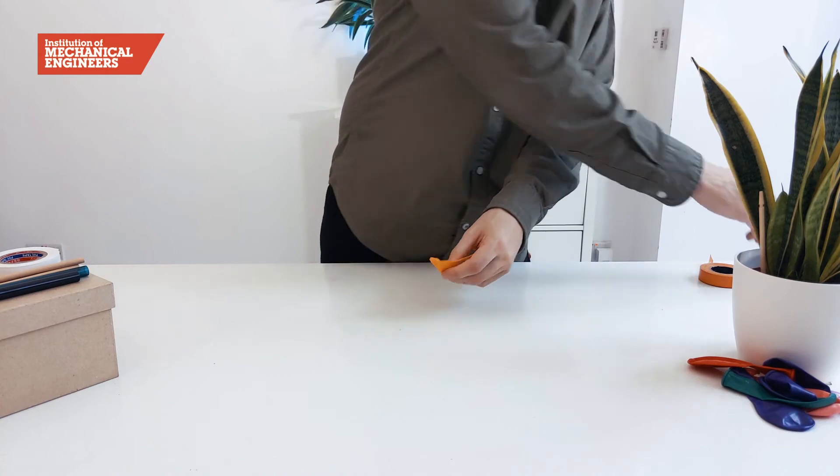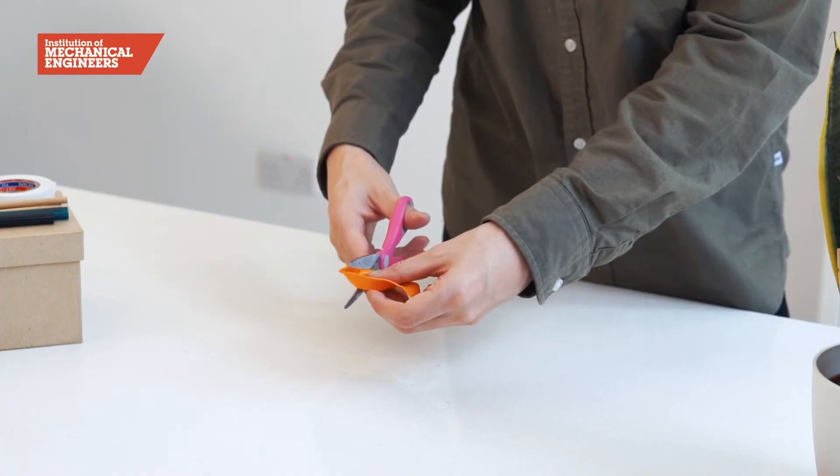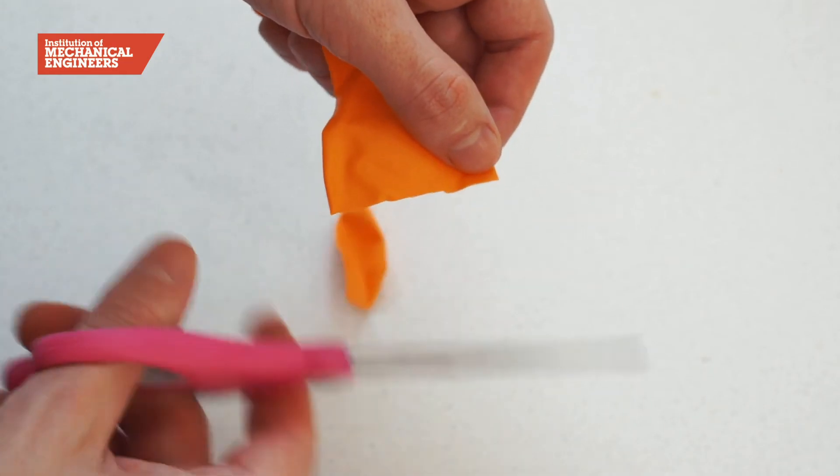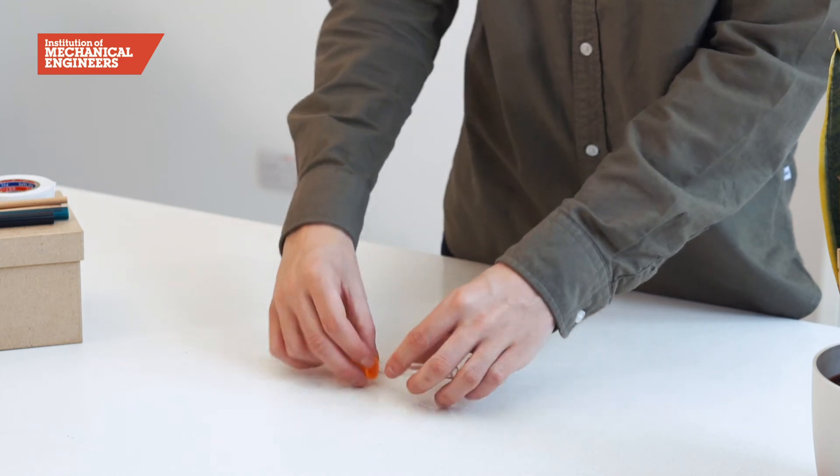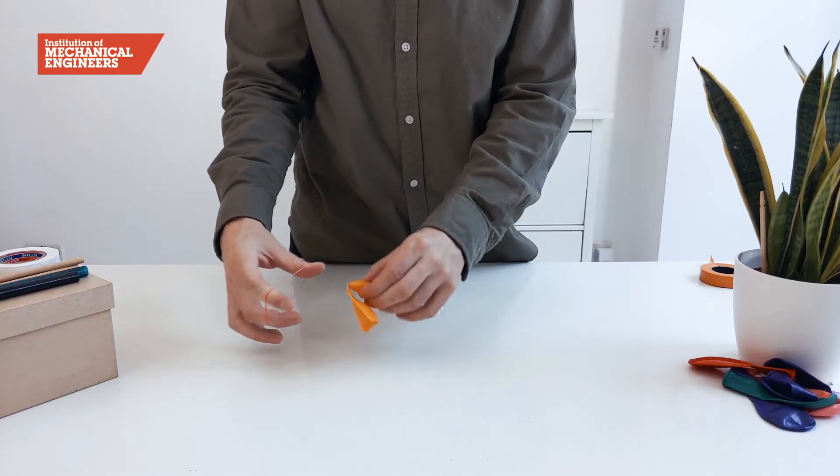Now we will make the ventilator. Begin by cutting another balloon in half then trimming the other drinking straw and connecting it to the cut down balloon using a small elastic band.